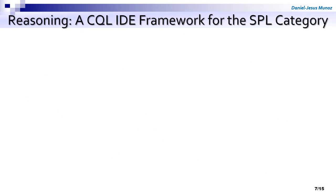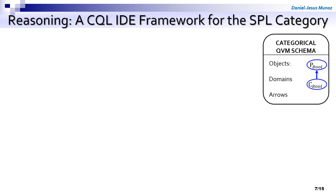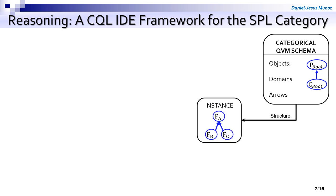After clarifying the model, the next step is the reasoning. Here we present the framework we developed for CQL IDE, which is the state-of-the-art categorical reasoner for category theory. First, we start with the SPL schema — the quality and variability model schema — which is a category, a metamodel, the structure. We define the structure with objects and domains: specifically, parent objects with child objects and the parent relationship, which is the hierarchical relationship. Then we populate it, creating a model from the metamodel, that is an instance from the category: three features, domain Boolean, and a node cardinality.